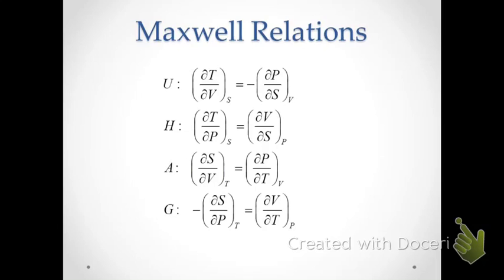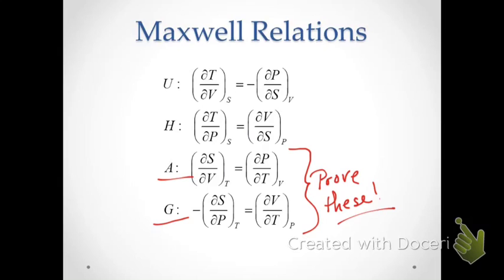We've done the derivation for internal energy and enthalpy, and you should prove to yourself that we can derive similar relationships for Helmholtz and Gibbs using the same techniques. So we have these four very important relations called the Maxwell relations, which are incredibly useful for deriving and calculating changes in various properties of physical and chemical systems.